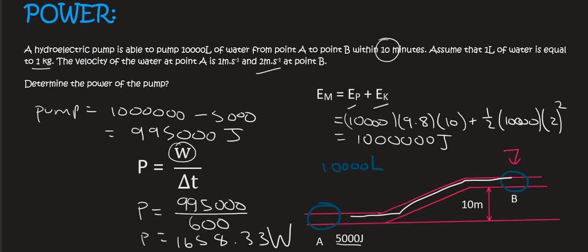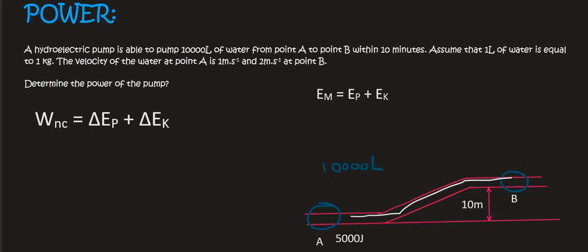Now the last formula you could have used is this one over here. Because remember, this formula does everything for you. So WNC stands for the work of or the energy of non-conservative. Now non-conservative is things like friction or applied forces. Now the pump is an applied force, so that would go over here.